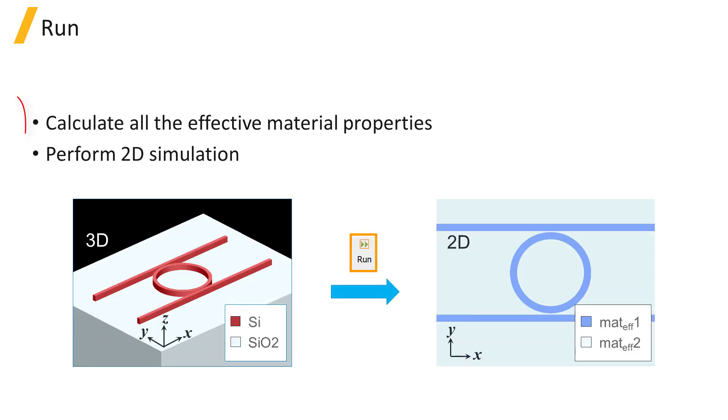Running the simulation will trigger the calculation of all the effective material properties required to represent the 3D geometry by a 2D set of effective materials, and a 2D FDTD simulation is performed.